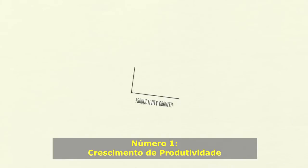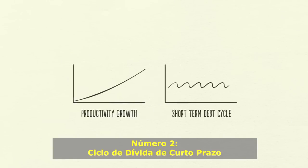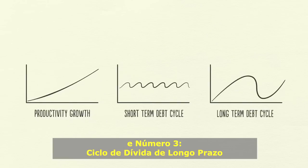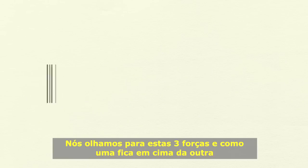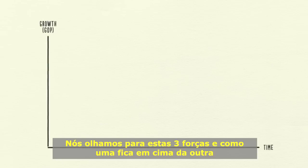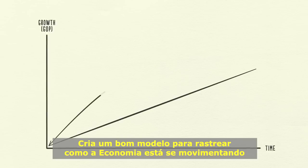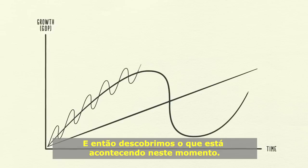Number one, productivity growth. Number two, the short-term debt cycle. And number three, the long-term debt cycle. We'll look at these three forces and how laying them on top of each other creates a good template for tracking economic movements and figuring out what's happening now.